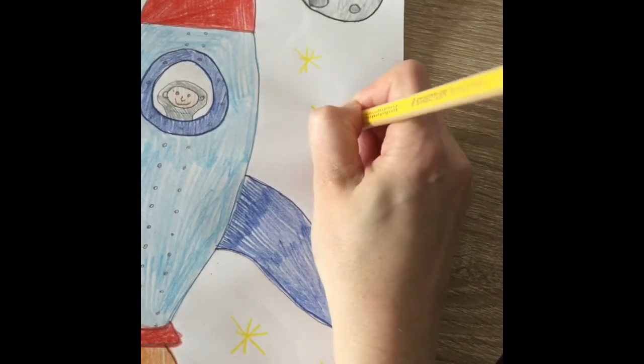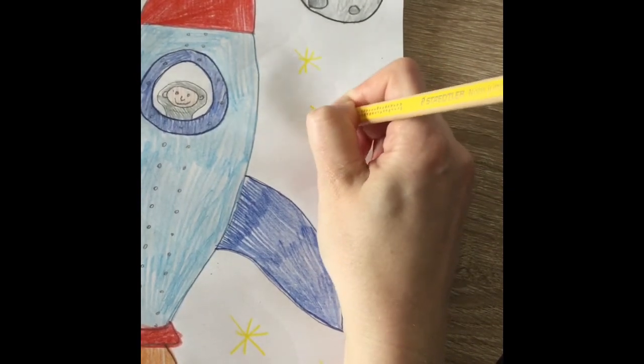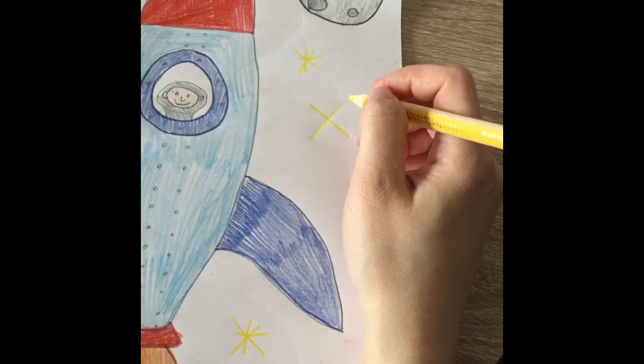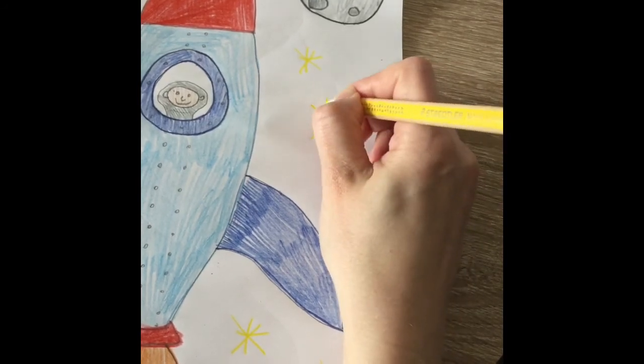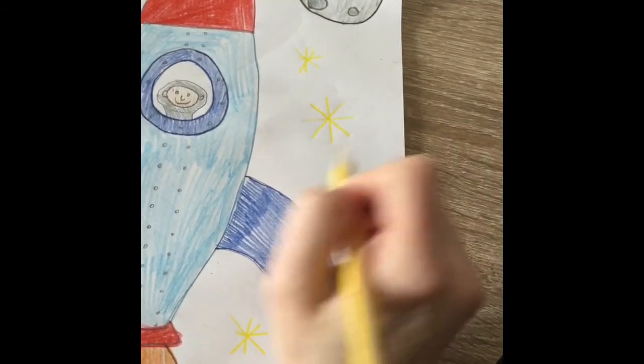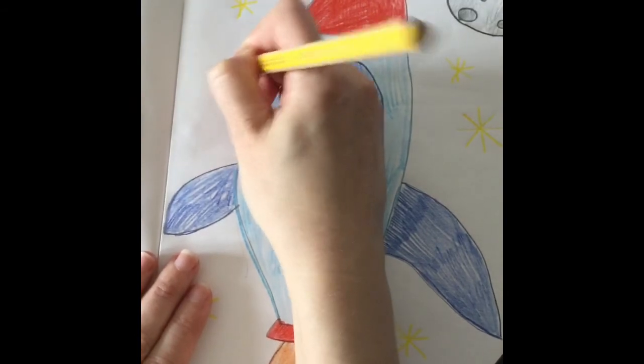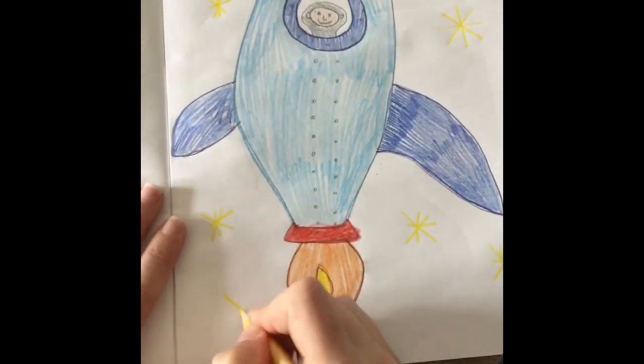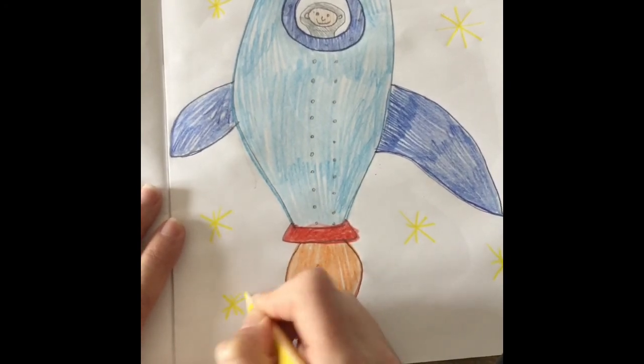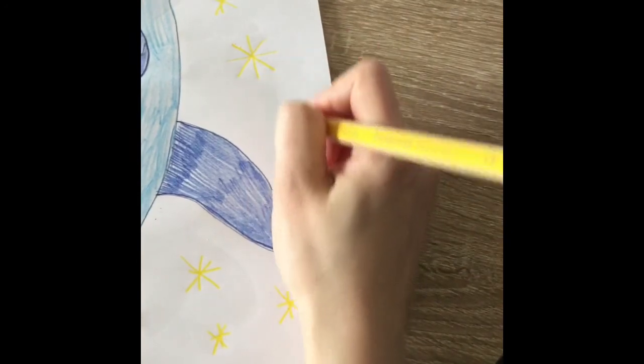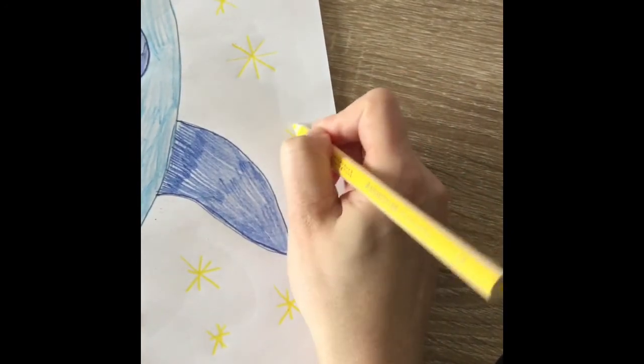So what I did was I did a line across like that, and like that, just like an X, like when we're making our treasure maps that X marks the spot. And then I went down the middle and then I went across like that to make my star. So you can make as many stars as you want, big or small, however many you'd want, if you want to add in some stars to your picture to give it some extra detail.